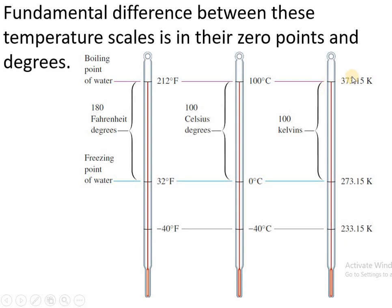On the other hand, if you look at the Kelvin scale, 100 degree Celsius represents 373.15 Kelvin and 0 degree Celsius represents 273.15 Kelvin. The differences lie in their zero points — zero degree is different for each scale — and in the degree sizes. The total difference between the 100 and zero points is 180 degree Fahrenheit, 100 degree Celsius, and 100 Kelvin.